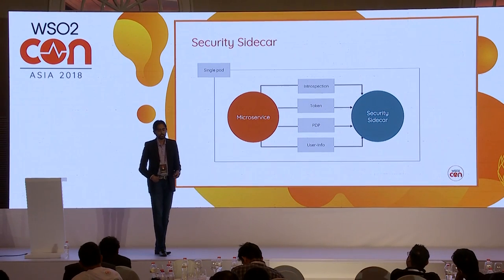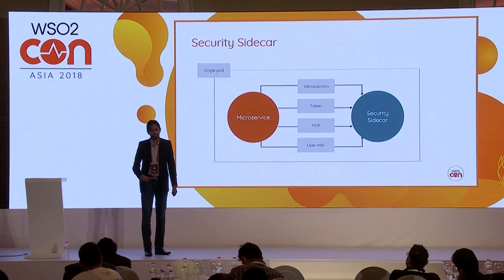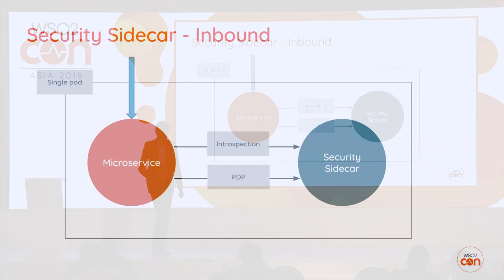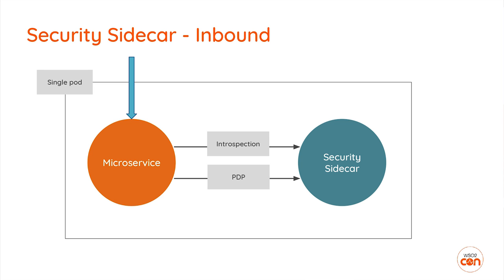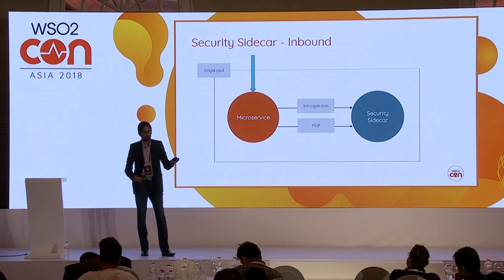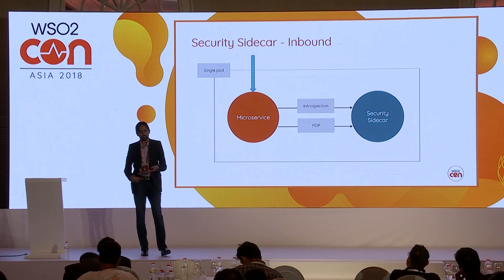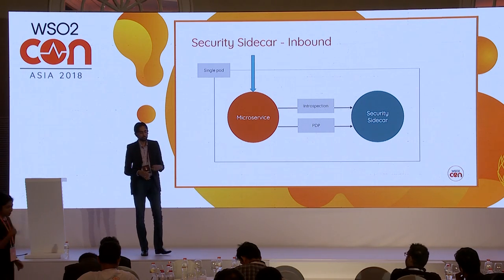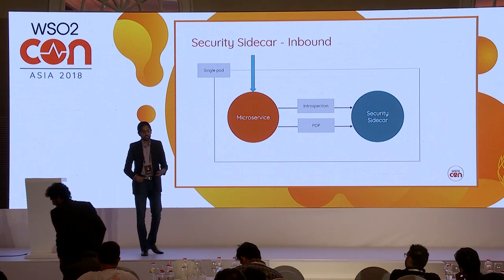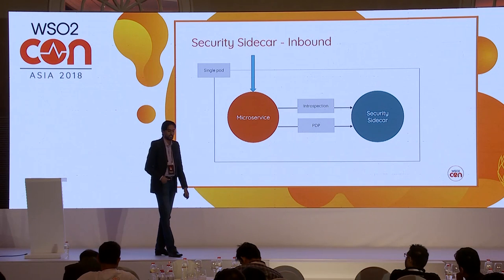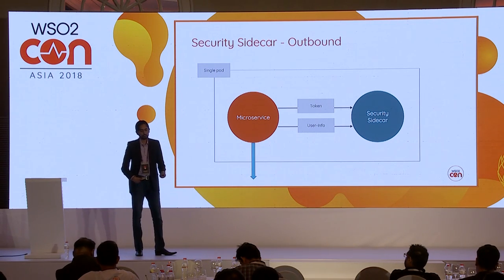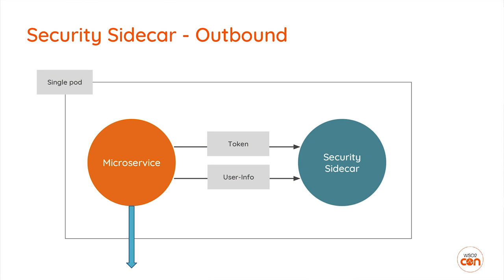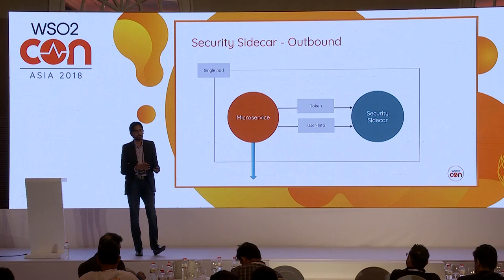For inbound requests, any request coming to the microservice is intercepted and offloaded to the security sidecar to handle authentication, introspection, or running the policy engine. Authentication and authorization are handled by the security sidecar. For outbound requests, if the microservice needs to talk to an external service or endpoint, the security sidecar attaches the necessary tokens to the outbound request, so the microservice implementation does not need to worry about those security details.